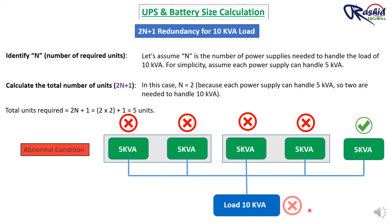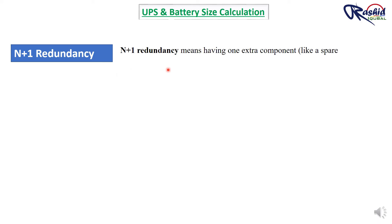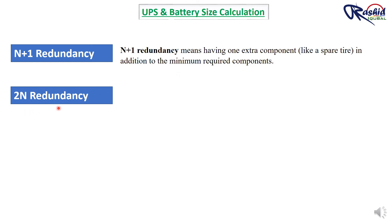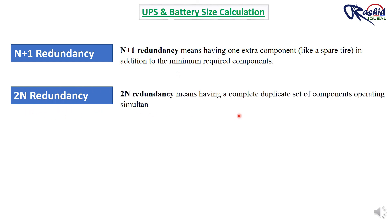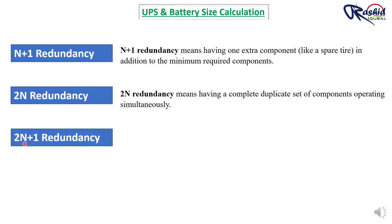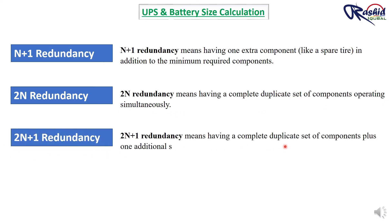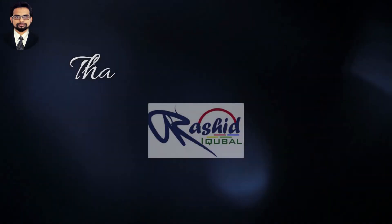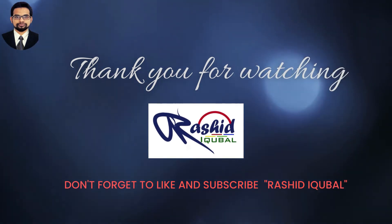In summary: N+1 redundancy means one extra component beyond the minimum required. 2N redundancy means a complete duplicate set of components operating simultaneously. 2N+1 redundancy means a complete duplicate set plus one additional spare component. In this video I explained how to calculate UPS and battery size. Please like and subscribe to the Rashid Iqbal channel. Thank you very much and see you in the next video.